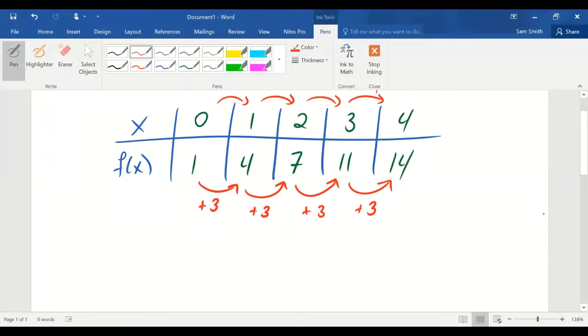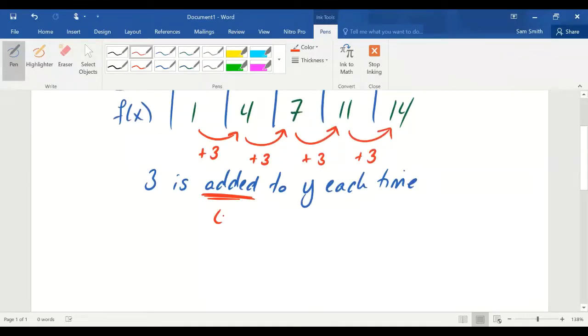So now that we have identified that the y values are being added by a consistent amount, 3 is added to y each time, the fact that a consistent number is being added each time tells you that the function is linear. And it has the form mx plus a.